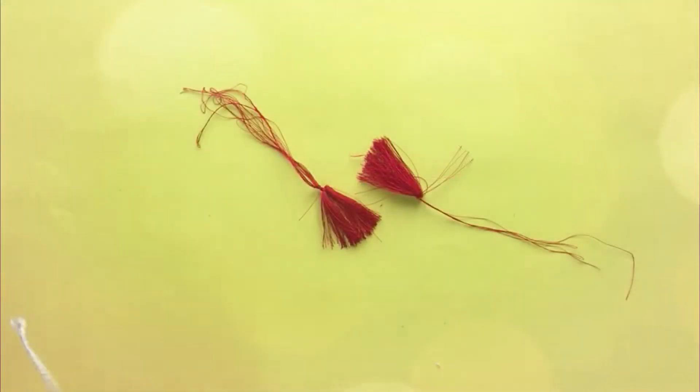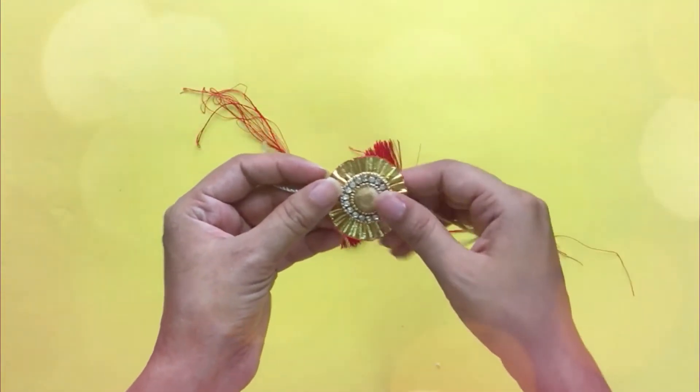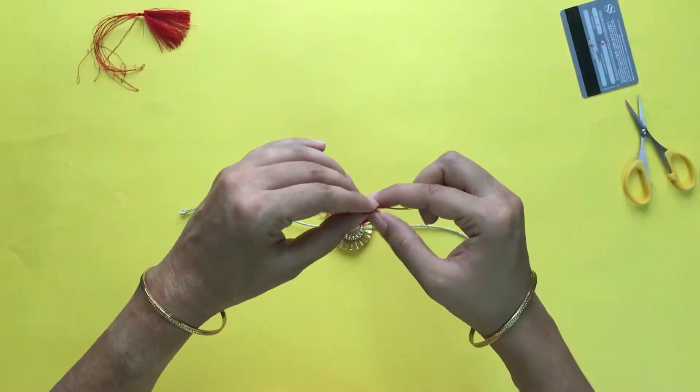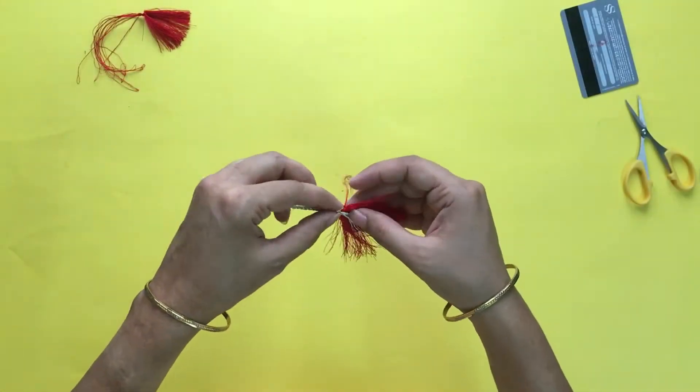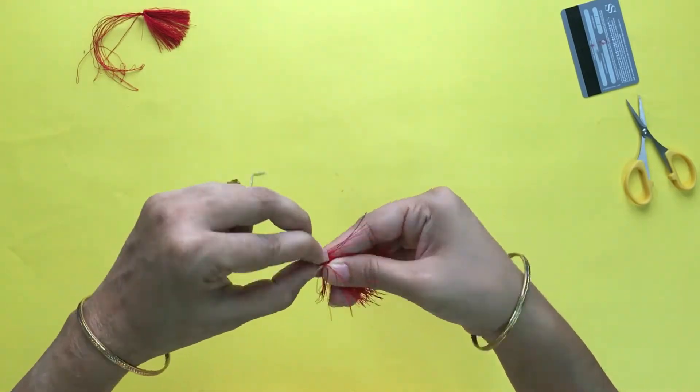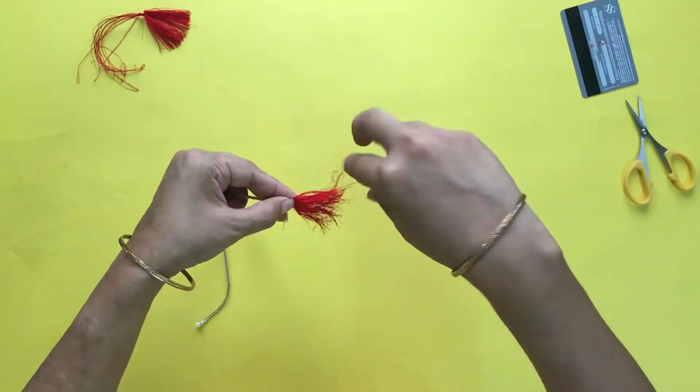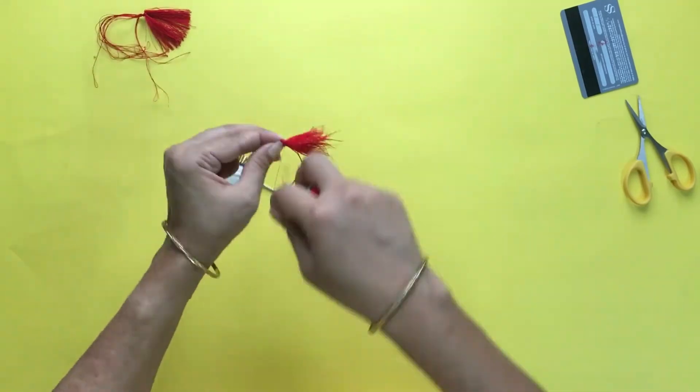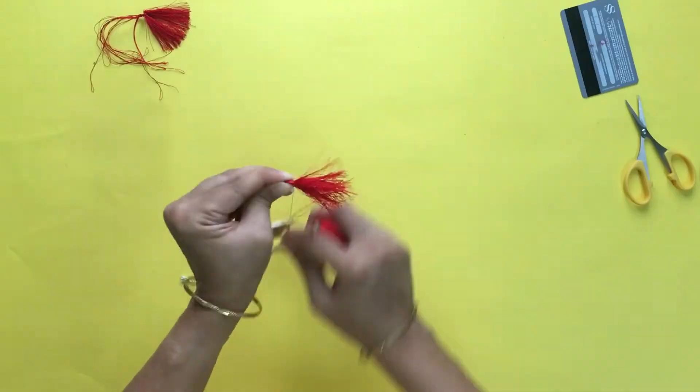Now take the Rakhi strings end and put it inside the tassel. Start wrapping the silk thread over the tassel as shown so that the Rakhi string and the tassel are fixed together.